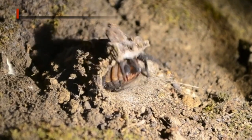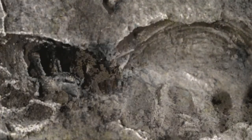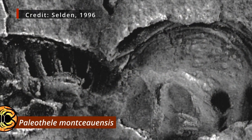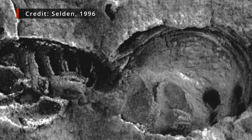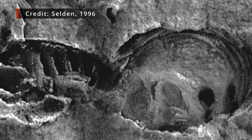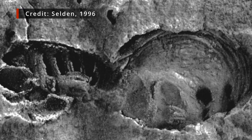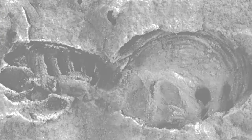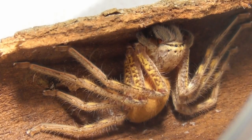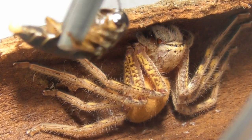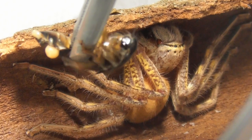In addition to extant Mesothelae, a fossil species, Palaeothele montceauensis, has been found in France in deposits dating to the upper Carboniferous, approximately 300 million years ago. The Opistothelae, in stark contrast to the Mesothelae, are extremely diverse and widespread, comprising the massive majority of spider species, including all Australian spiders.